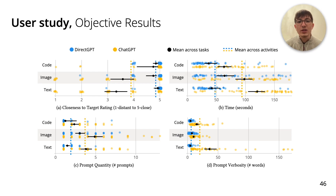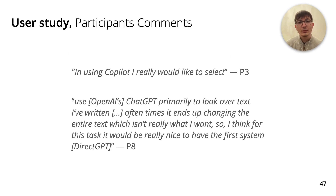Of course, these results do not mean that DirectGPT is always superior to ChatGPT. There are still contexts when ChatGPT might be better, such as more exploratory tasks. But these results do show that for editing tasks, direct manipulation can really help and is better than just chatting. These results were also reflected in participants' comments — particularly, participants mentioned that the features of DirectGPT would have been helpful had they existed when they used ChatGPT to edit text or GitHub Copilot to edit code.